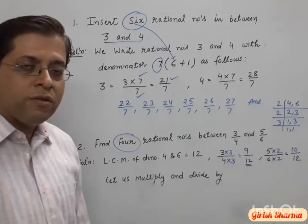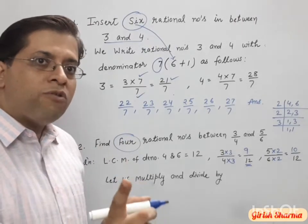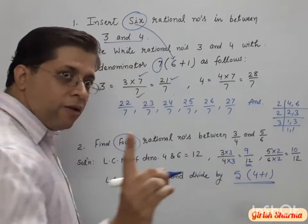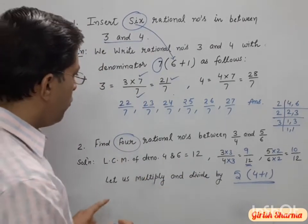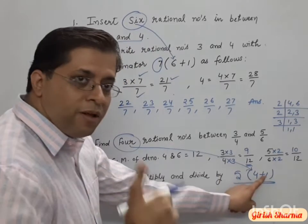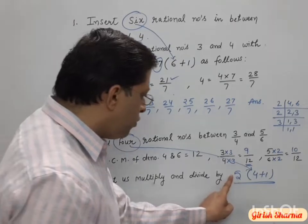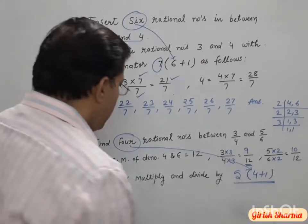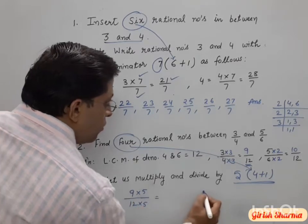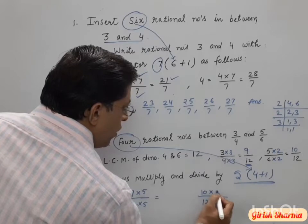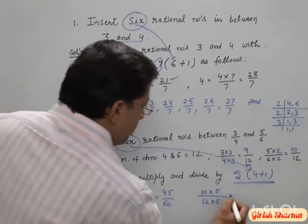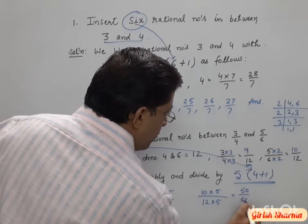We have to insert 4 rational numbers, so we multiply and divide by 4 plus 1, which is 5. For 9/12: 9 times 5 is 45 and 12 times 5 is 60, giving 45/60. For 10/12: 10 times 5 is 50 and 12 times 5 is 60, giving 50/60.